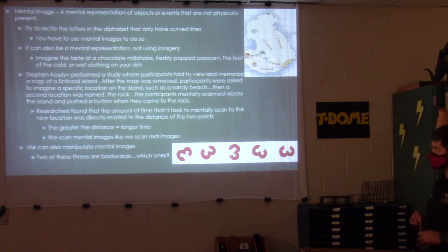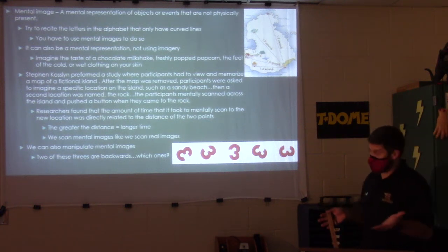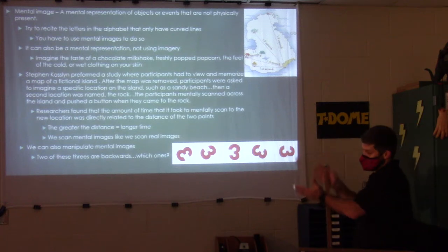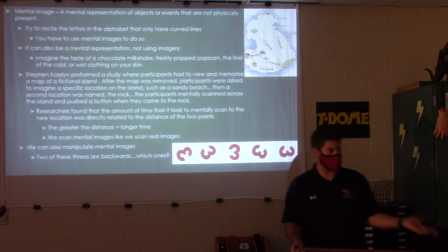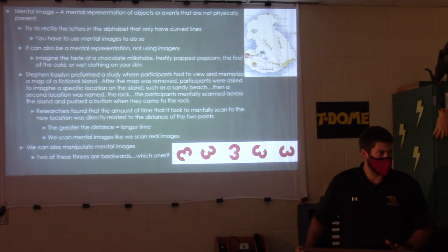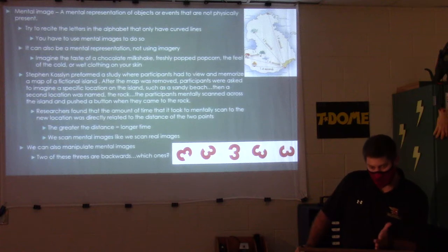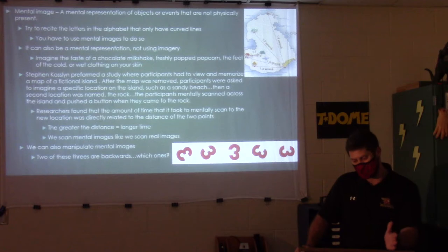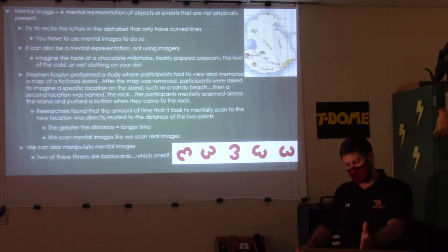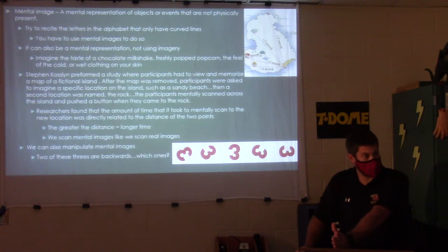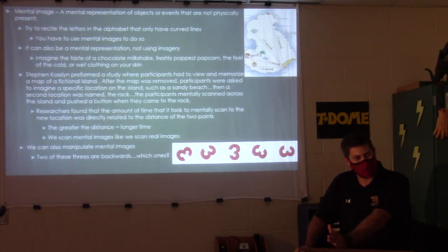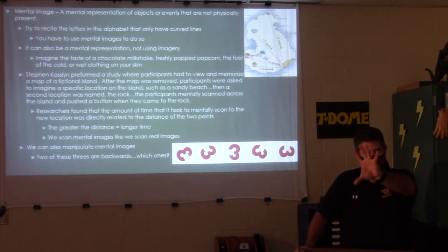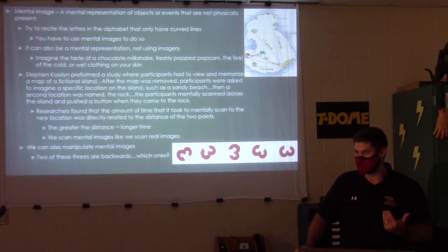A mental image is a mental representation of objects or events that are not physically present. This is something that absolutely sets us apart from tons of other species. Humans can hold things in their mind and rotate them, think about how long it takes to get somewhere — cognitive maps, seeing something with the mind's eye and rotating it to see it at a different angle.